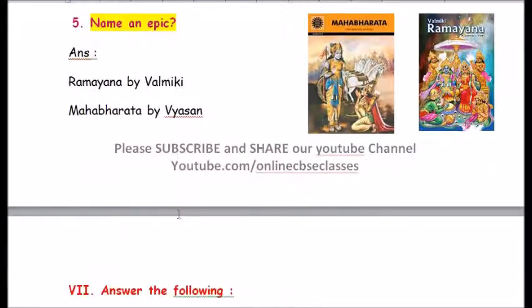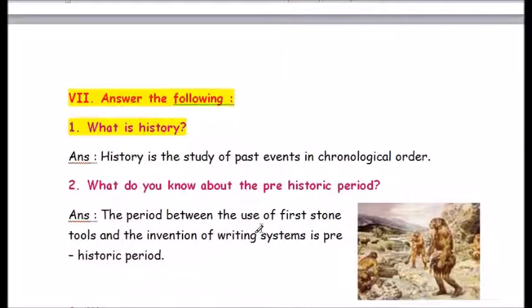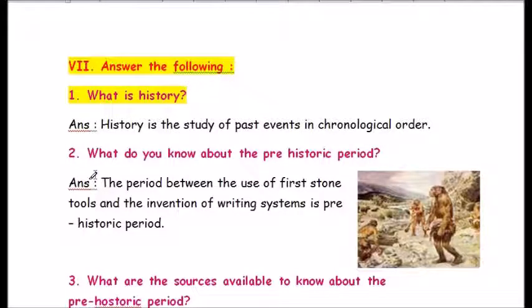Roman number seven — answer the following. Question one: what is history? History is the study of past events in chronological order. Chronological order is the arrangement of things following one after another in time.